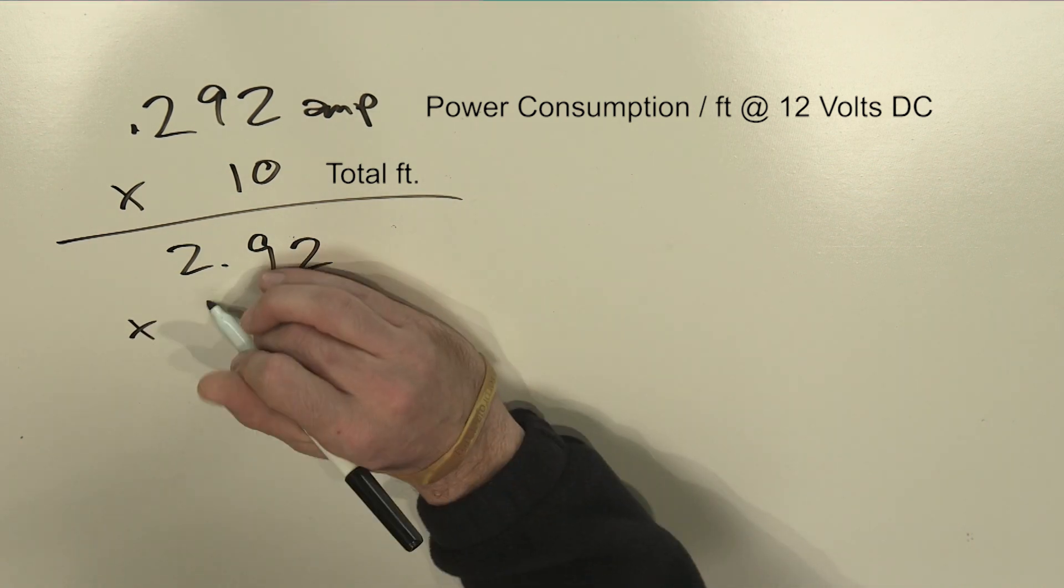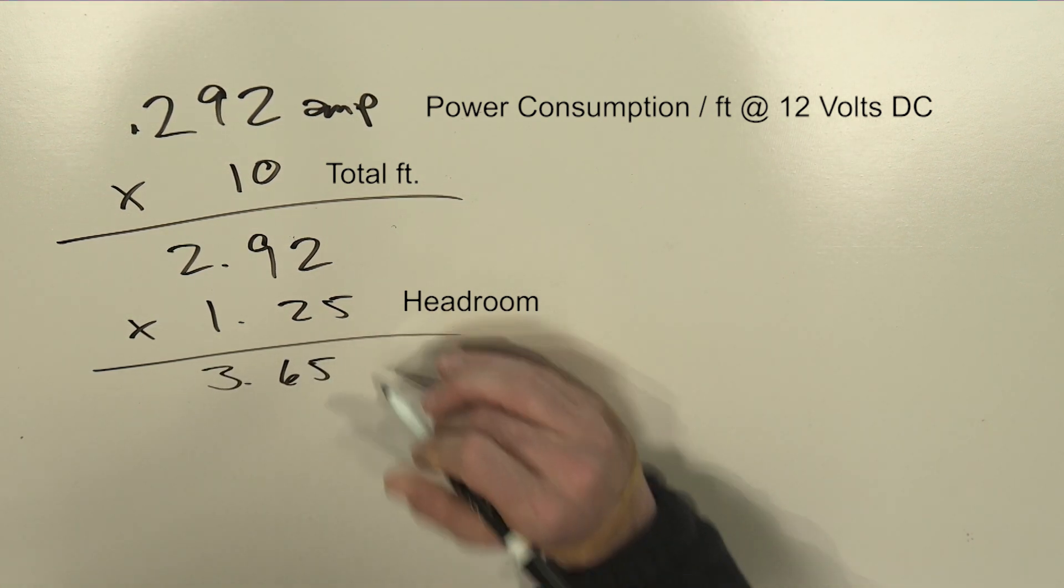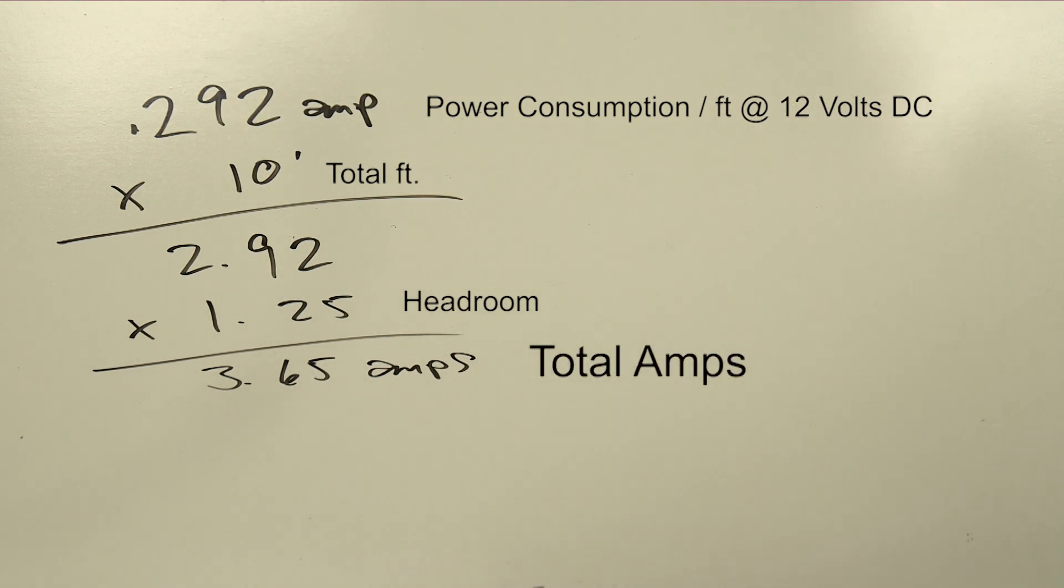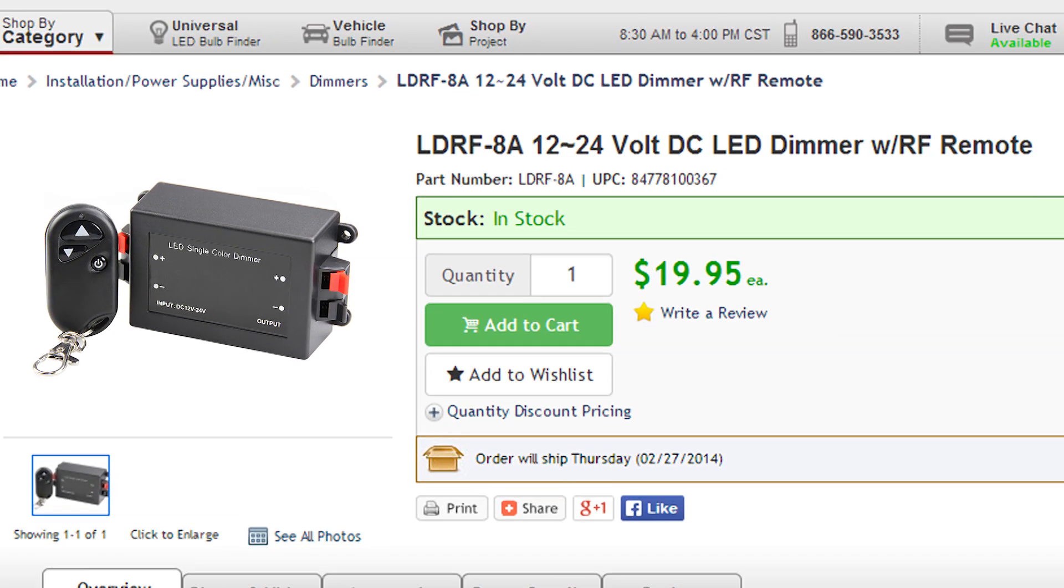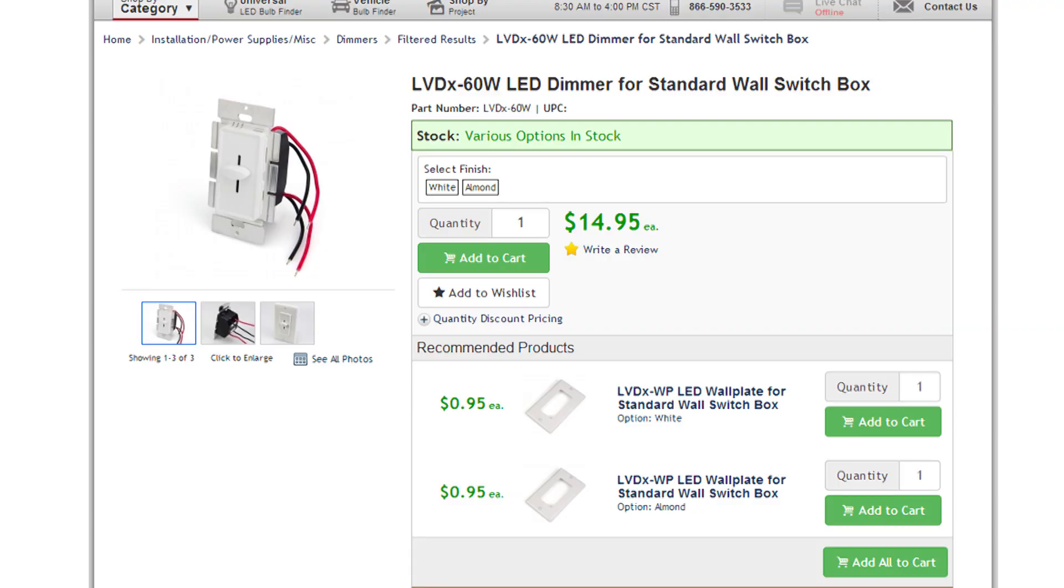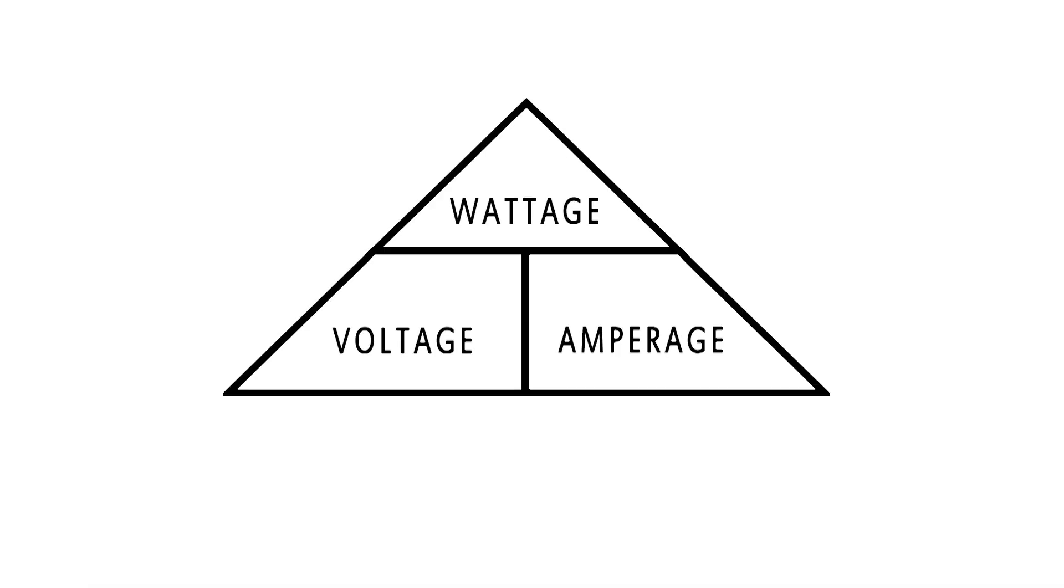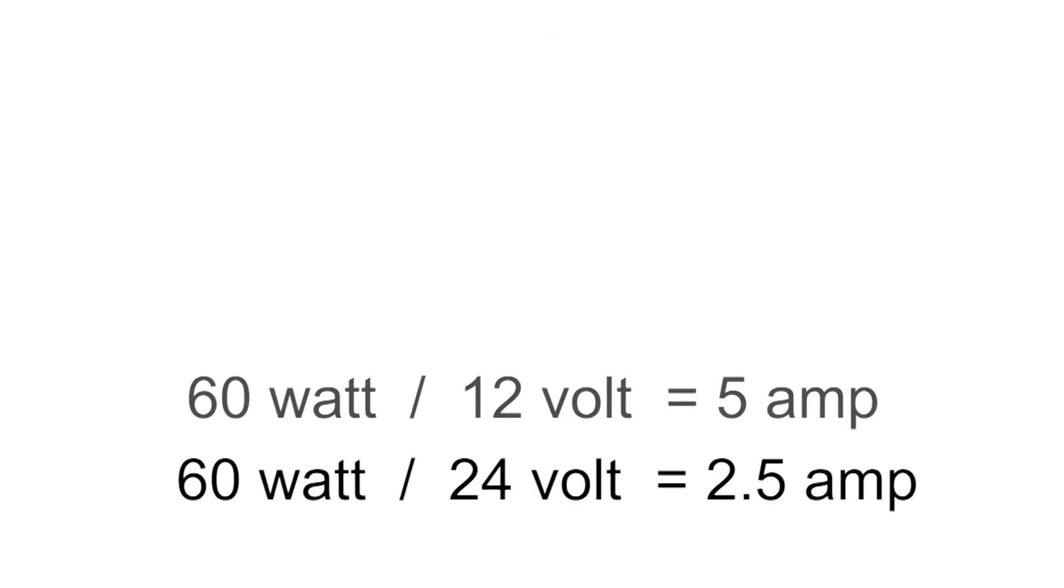We also always want to put in our headroom of that 1.25 factor, which in this case gives us 3.65 amps for that 10 feet of strip. You'll notice that some dimmers have amperage ratings, some have wattage. I wouldn't worry too terribly much about that. Like this dimmer, the LDRF 8A, is rated for a total of 8 amps, so we'd be fine because we're not even at 4 amps. However, many in-wall dimmers like this one are rated at 60 watts total. Using that triangle formula, that's actually at 12 volts, rated for 5 amps. At 24 volts, it will be rated for 2.5 amps.